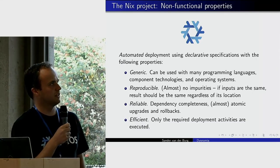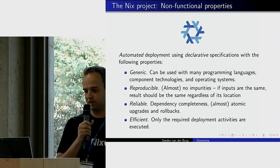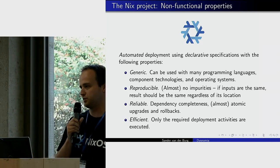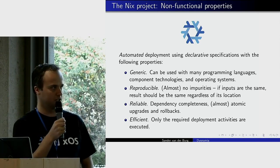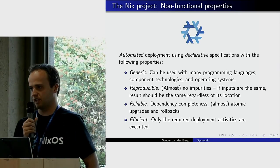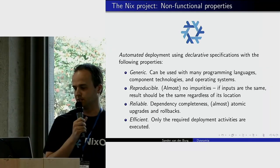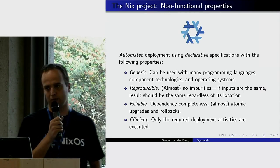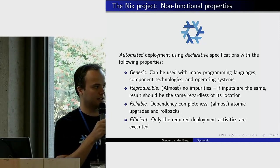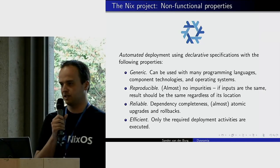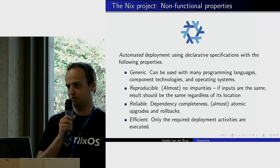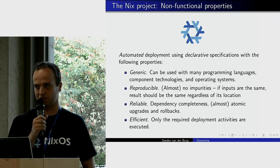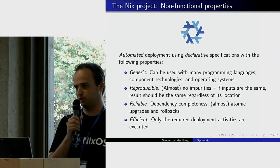The non-functional properties of the Nix project are also interesting. Nix is generic — it's not designed for a specific programming language, so you can use it to compile C projects, Java projects, Node.js, Ruby, Go, Haskell — it's quite generic. It also supports reproducible deployment thanks to the underlying declarative model, meaning whenever your inputs are the same, the output is a near bit-identical result regardless of what machine carries out the build.